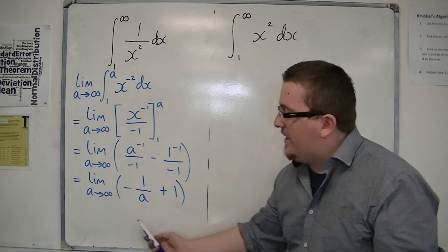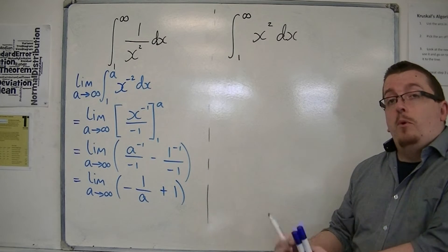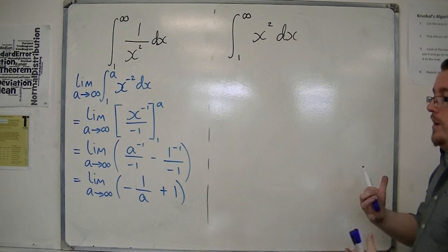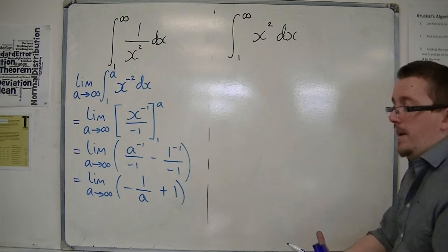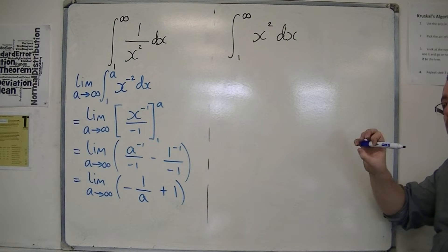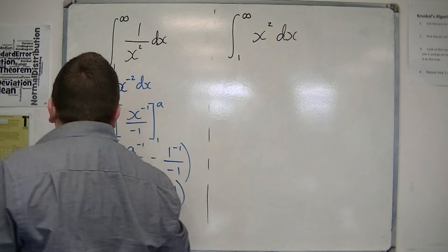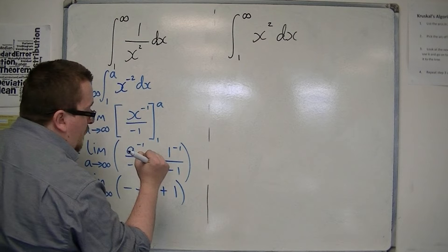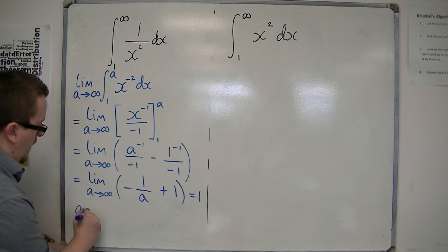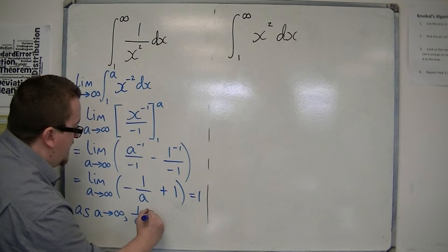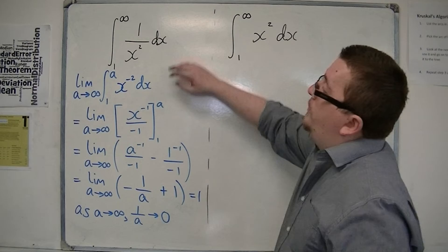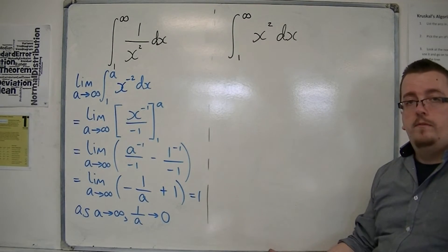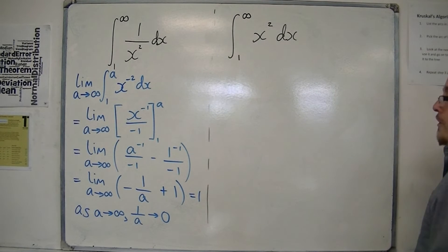If a tends to infinity, then 1 over a will get smaller and smaller. If the denominator gets larger and larger — 1 half, 1 third, 1 tenth, 1 hundredth, 1 thousandth, 1 millionth, 1 billionth — the fraction gets smaller and smaller to the point where this will become effectively zero, and you're just left with 1. So as a tends to infinity, 1 over a tends to zero, and this limit tends to just 1. That means the integral between 1 and infinity of 1 over x squared dx is just 1. It's not infinity.